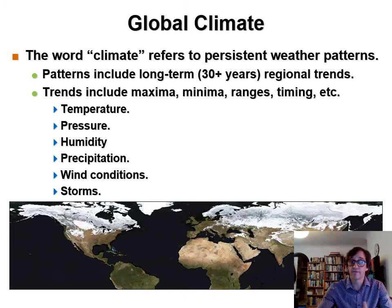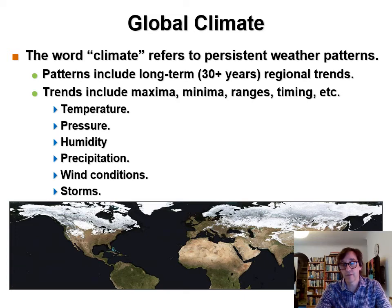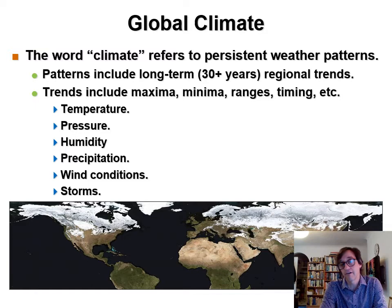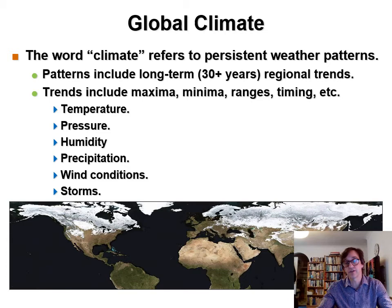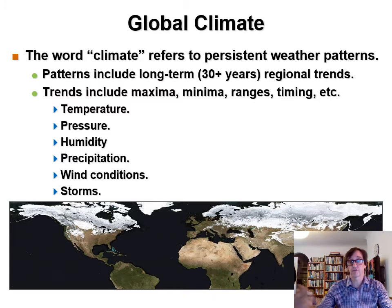Global climate refers to persistent weather patterns, and these patterns include long-term regional trends. These trends include maxima and minima for temperature, but also for other aspects — ranges and timing. As well as temperature, climate data variables include air pressure, humidity, precipitation, wind speed, wind conditions, and storminess. You can look for trends — are they increasing, are they decreasing, are they staying the same with time? Once you get an idea of those trends, you can say yes, we're going through climate change — temperatures are increasing, there are more intense storm events, etc.